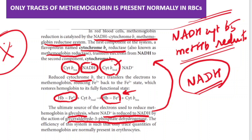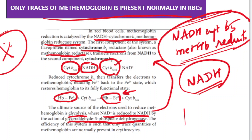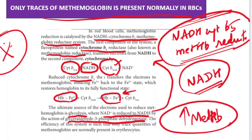The NADH cytochrome B5 methemoglobin reductase enzyme system is very important. The efficiency of this enzyme system ensures that only traces of methemoglobin are present normally in the RBCs. When this functional enzyme system is deficient, we become more prone to developing methemoglobinemia. That is why only traces of methemoglobin are present normally — because this enzyme system is functioning effectively in our RBCs.